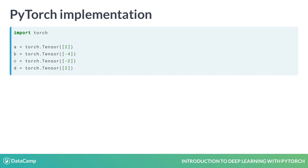Let's implement it in PyTorch. We first initialize tensors A, B, C, and D to the corresponding values 2, minus 4, minus 2, and 2.